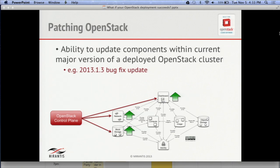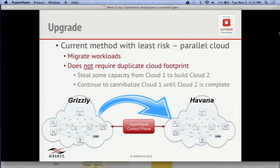Finally, upgrades — the big issue. At Mirantis, we've found that the safest methodology for upgrades is to create a parallel OpenStack. You don't have to duplicate all the resources — you can steal some resources from your initial cloud, build your second cloud, and then start migrating workloads over. We find that this is very successful, relatively low risk, and leads to the best possibility of success. When you create your first cloud, always leave a little bit of capacity available, knowing an upgrade is coming. You may need to add capacity to plan for that second cloud and ensure the upgrade is successful without a major disruption — it could be a relatively quick switchover.